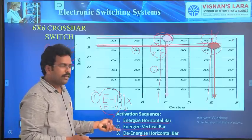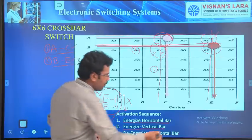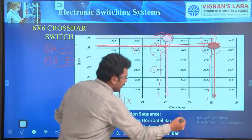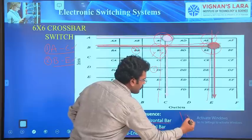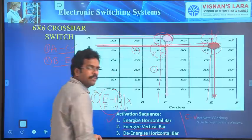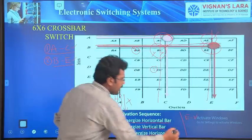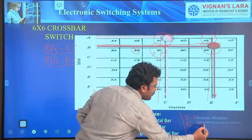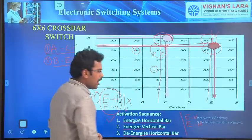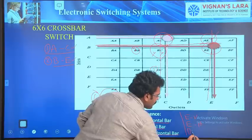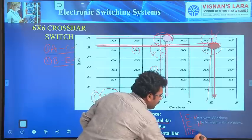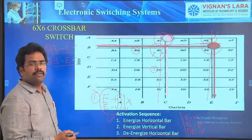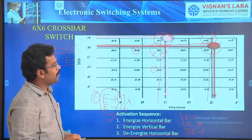This is scheme 1. You can also follow scheme 2. What is scheme 2? Scheme 2 is: energize vertical, then energize horizontal, and finally de-energize vertical. You can follow any one of the schemes for proper latch-up.